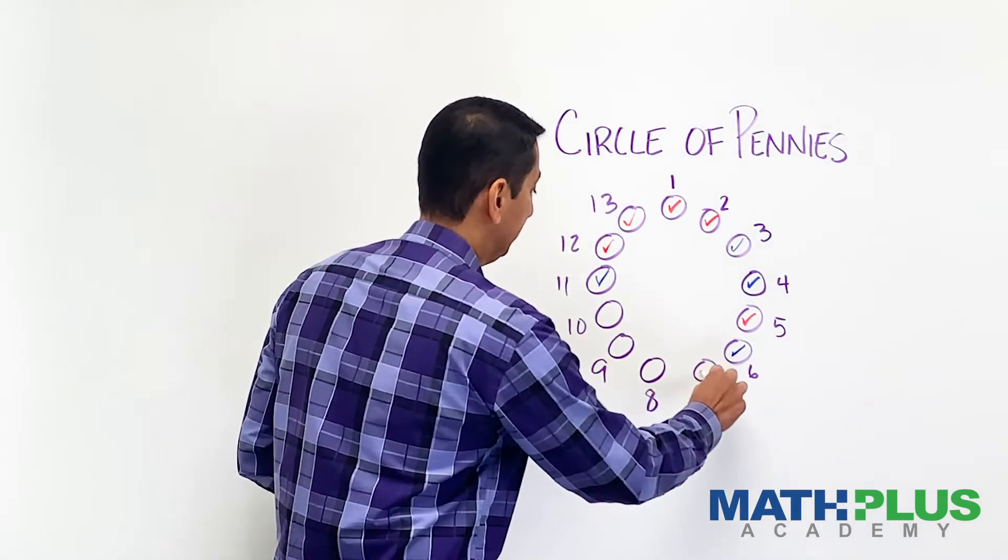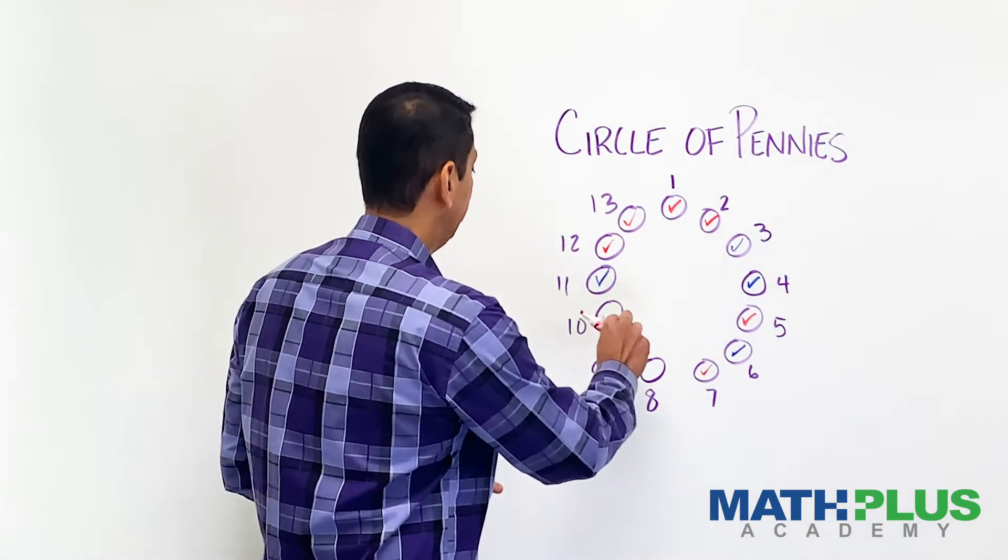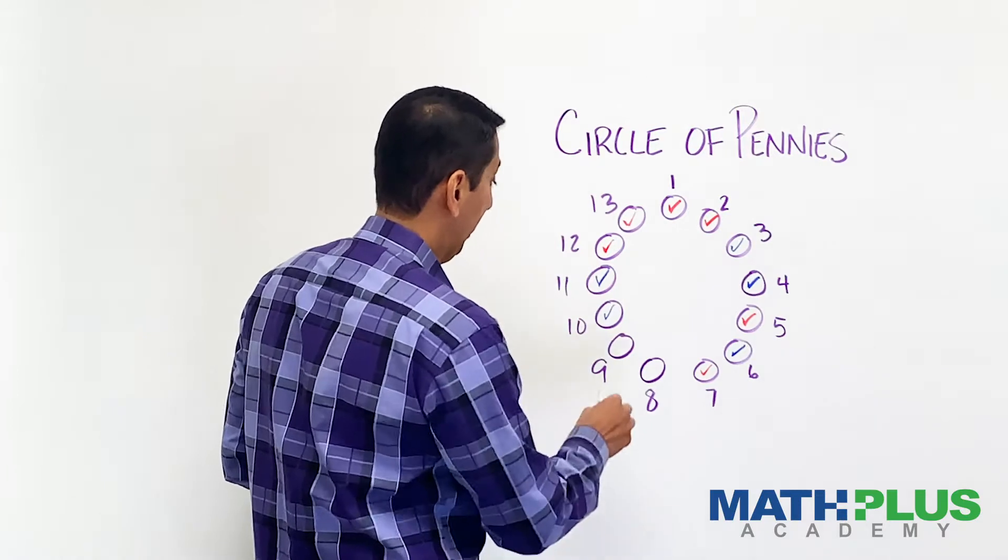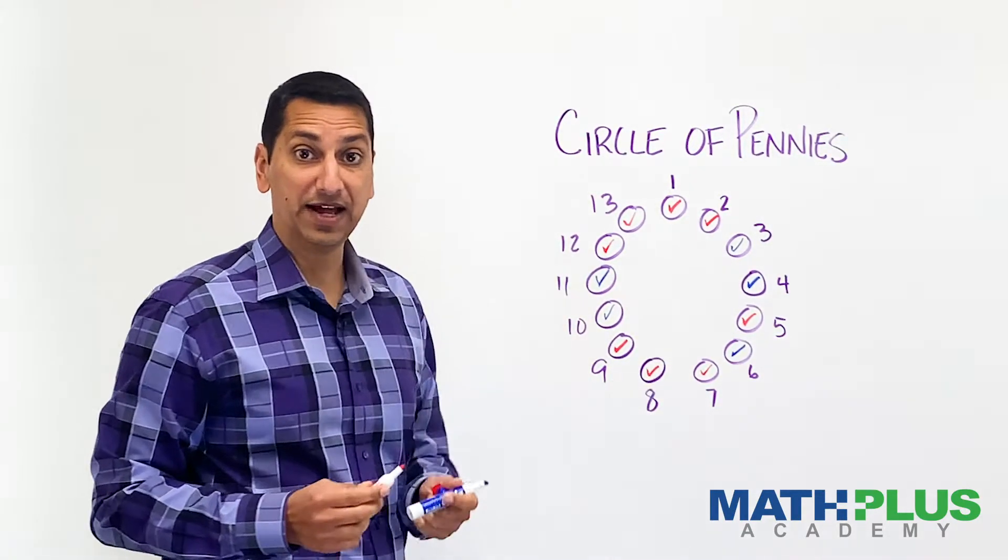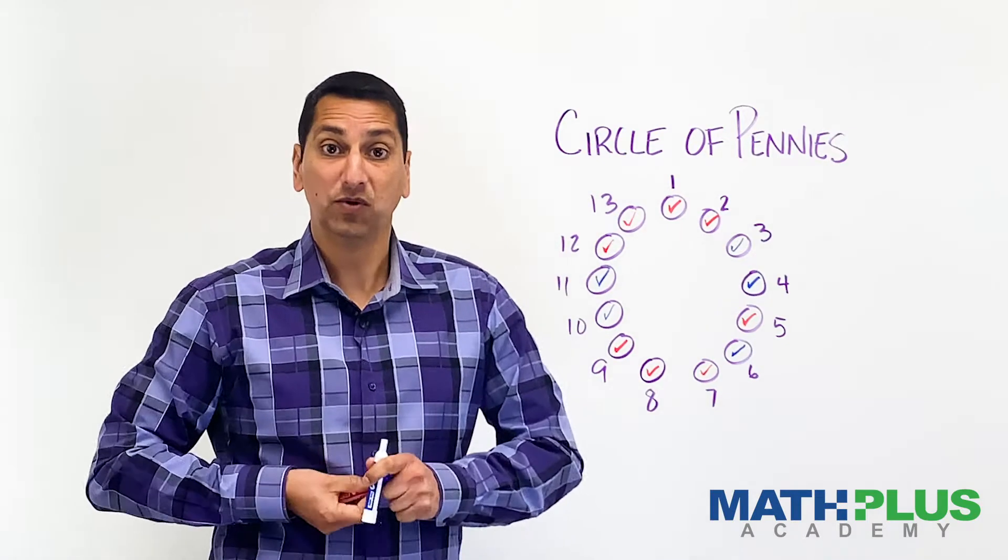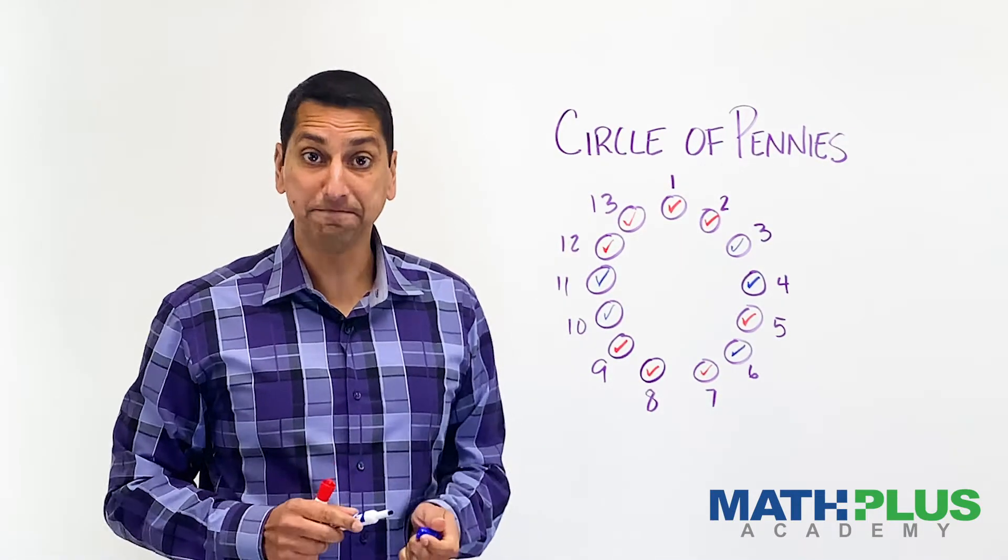Player one maybe takes one. Player two takes one. And then player one takes both. And by taking the last penny, player one wins. So that's the game. That's how you play.